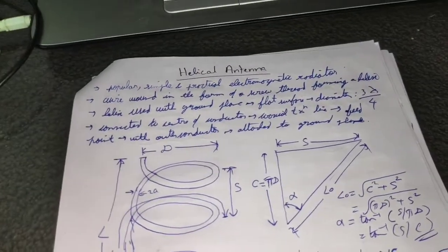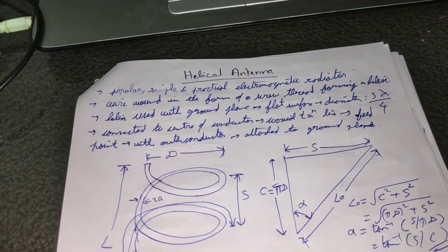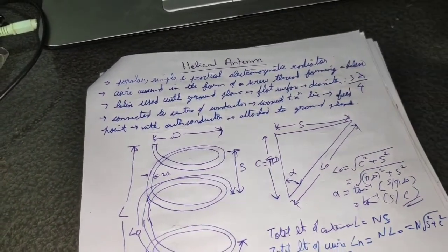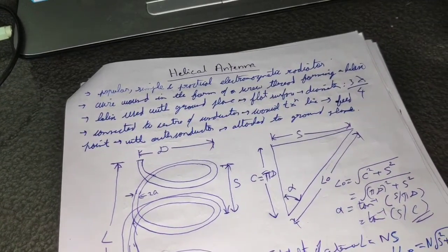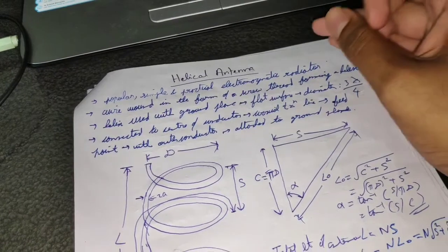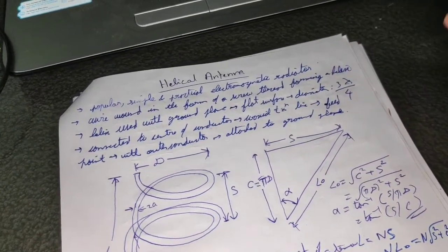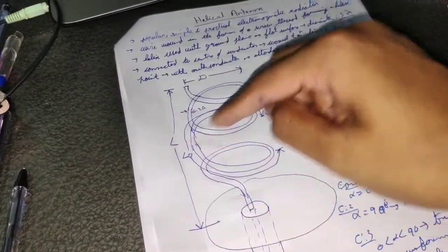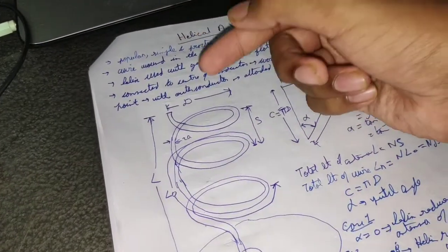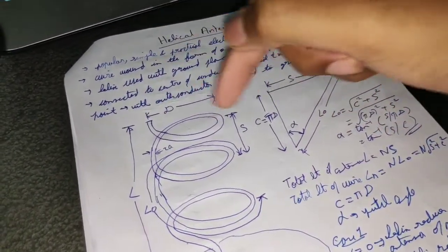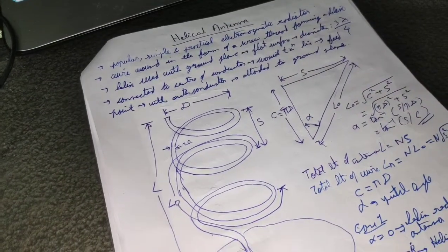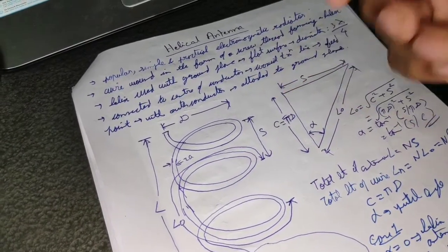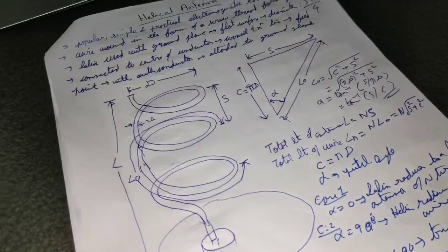Hello everyone, welcome to Beta Creations. Today I'm going to talk briefly about helical antenna. A helical antenna is a popular and practical electromagnetic radiator. It is formed when a wire is wound in the form of a screw thread, forming a helix — that's how a helical antenna is created.